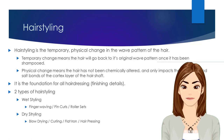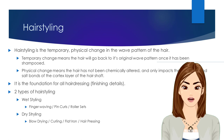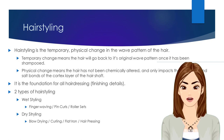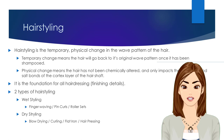Hair styling is the temporary, physical change in the wave pattern of the hair. A temporary change means the hair will go back to its original wave pattern once it has been shampooed. A physical change means the hair has not been chemically altered and only impacts the hydrogen and salt bonds in the cortex layer of the hair shaft. Hair styling is the foundation for all hair dressing.